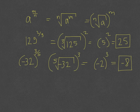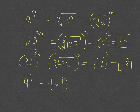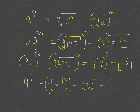For 9 to the negative 1/2 power, we take the square root of 9 first, which is 3, and then raise it to the negative 1 power. A negative exponent makes it a fraction, so 3 to the negative 1 becomes one-third.